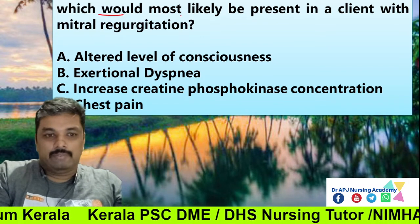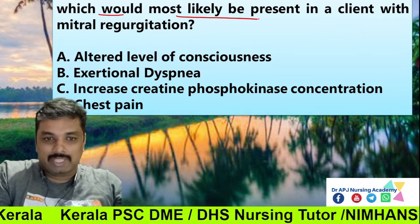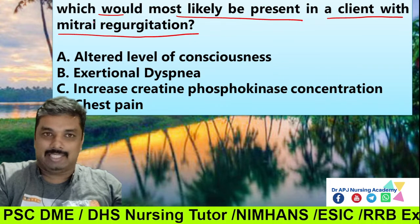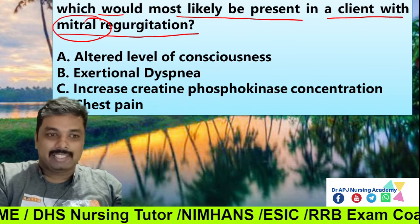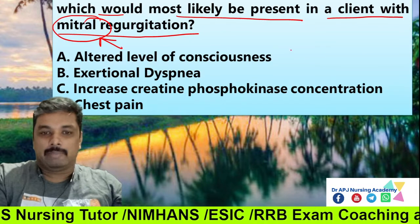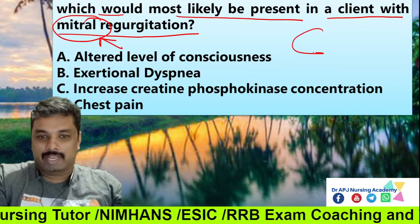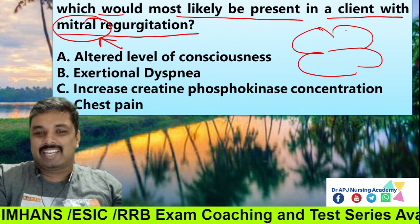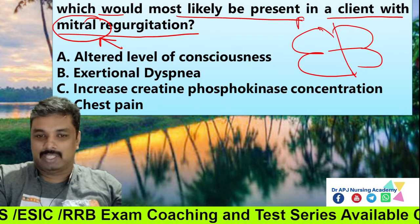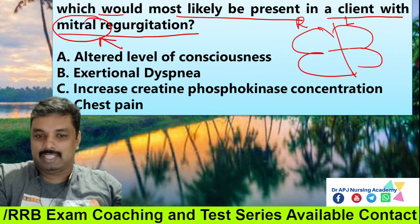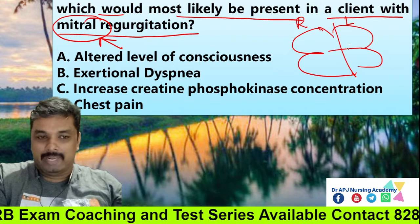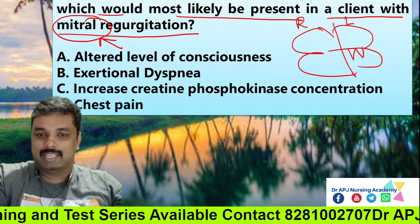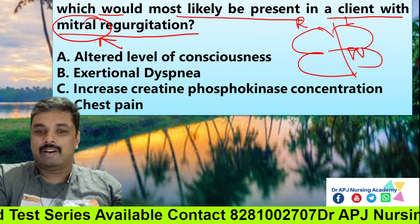First question: Which would be most likely to be present in a client with mitral regurgitation? Let's take a look at the heart. The heart has a left side and right side. Mitral valve regurgitation — that is bicuspid valve regurgitation.